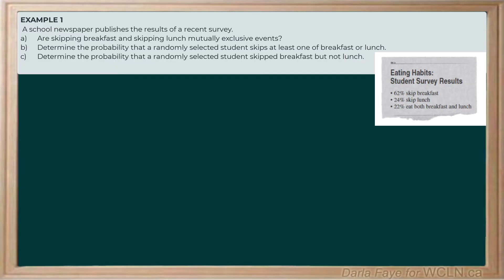Let's take a look at what the question's asking us to find. The first part wants to know whether or not these are mutually exclusive events, and that will help us tackle parts B and C. Part B wants to know the probability that a randomly selected student skips at least one of breakfast or lunch. Part C asks us to determine the probability that a randomly selected student skipped breakfast but not lunch.